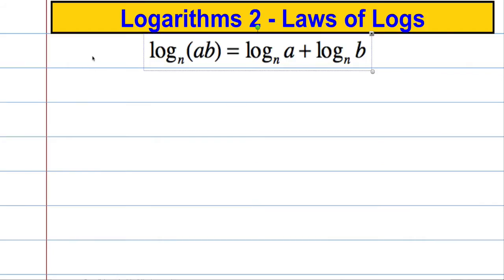The first law that we're going to learn about is this one: the log to some base n of A times B — so the log of a product — equals the sum of the individual logs: log to the base n of A plus log to the base n of B. So let's see if we can derive where this is coming from. Suppose we have some number n raised to some power x, and we let that equal an answer A.